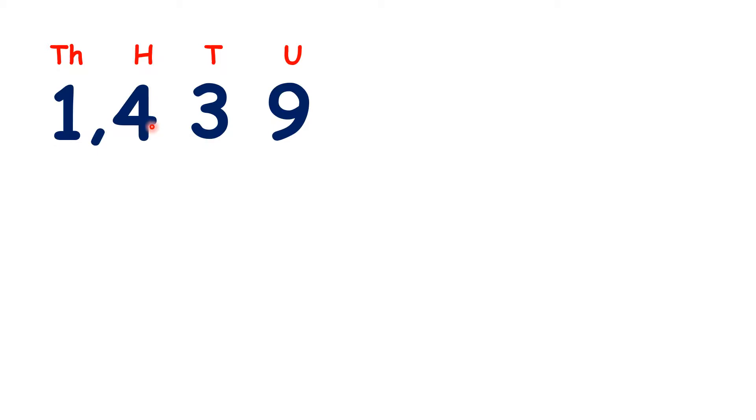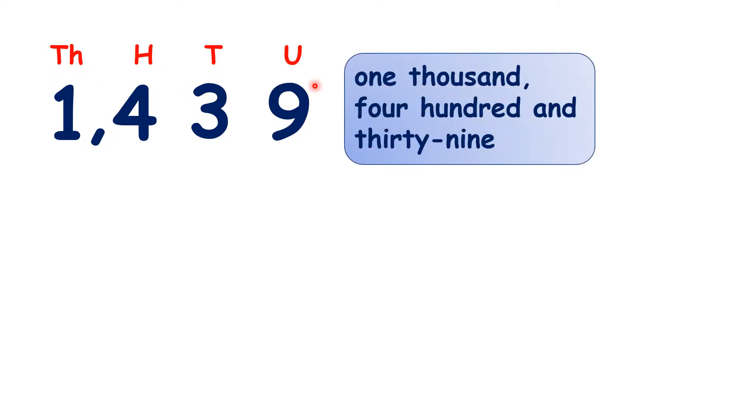So looking at our place value columns, we know about units, tens, and hundreds, but then the fourth one from the right is our thousands column. So we say this number as one thousand, four hundred, and thirty-nine.